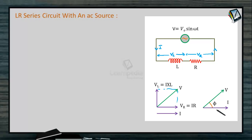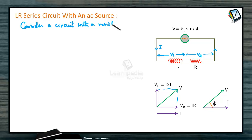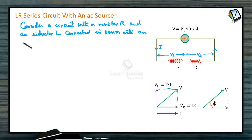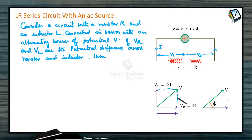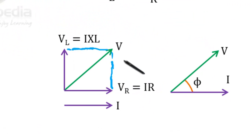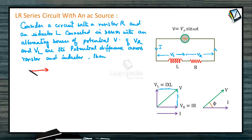The angle between them is tan φ. Consider a resistor R and inductor L connected in series with an alternating source V. If VR and VL are the potential differences across the resistor and inductor, then by the phasor diagram, V = √(VR² + VL²). The current and voltage across the resistor are in the same phase, but the voltage across the inductor leads the current by 90 degrees.